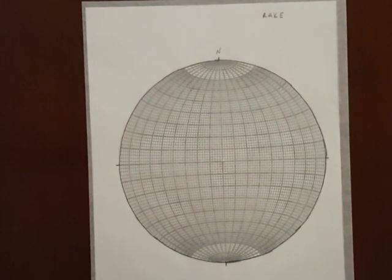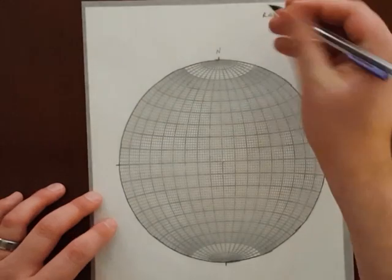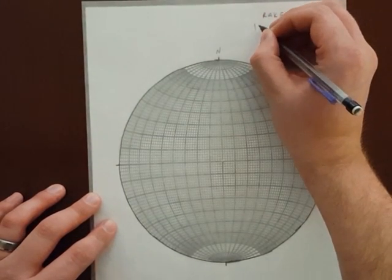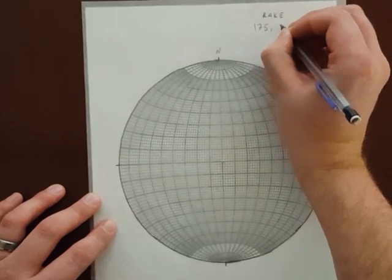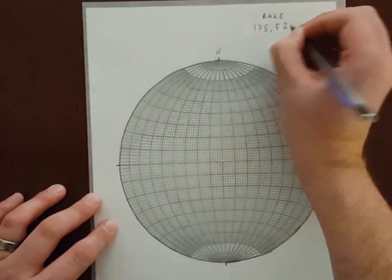I think rake is best understood backwards, so here's a plane: 175, 52.